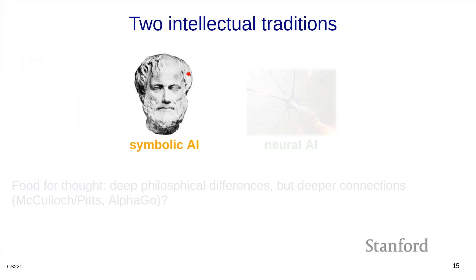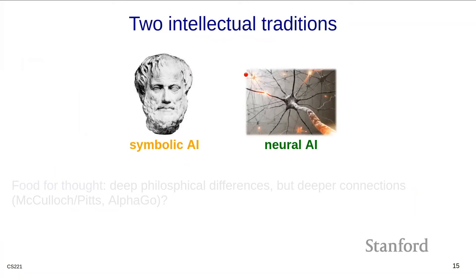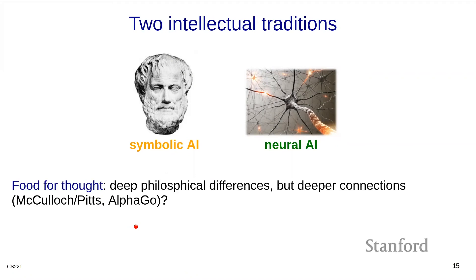Let's reflect. We have seen two intellectual traditions: symbolic AI with its roots in logic, and neural AI with its roots in neuroscience. The two have fought fiercely over the decades over philosophical differences. But maybe there are deeper connections. McCulloch and Pitts' paper that introduced neural networks spent most of the time talking about how it can actually encode logical operations. And the game of Go is a perfectly logical game governed by a few elegant simple rules, yet AlphaGo used the powerful pattern-matching capabilities of neural networks to solve this otherwise logical game. There may be room for more symbiosis than we think.